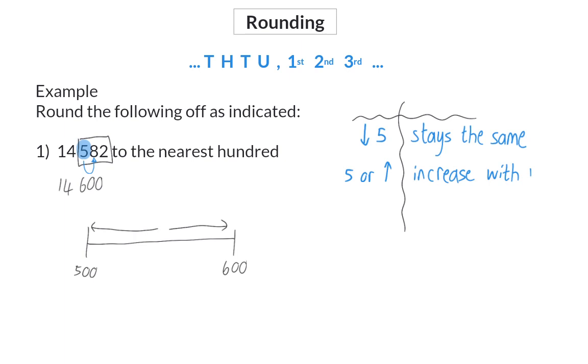In our example, the digit to the right of the one we need to round was an 8, which means our digit of 5 had to increase by 1, and that is why we rounded to 14,600.